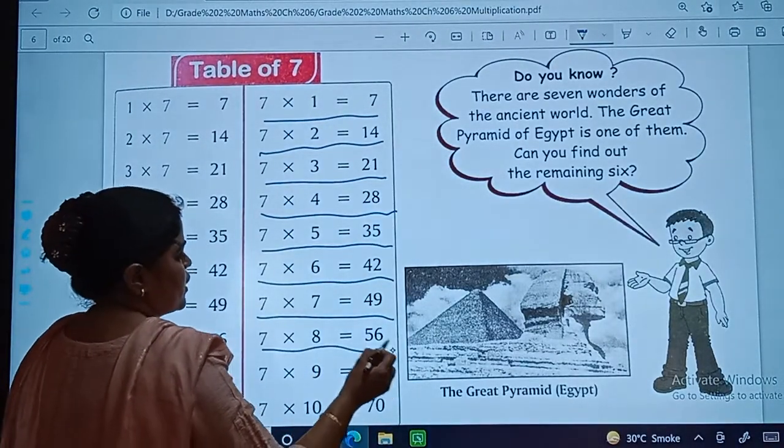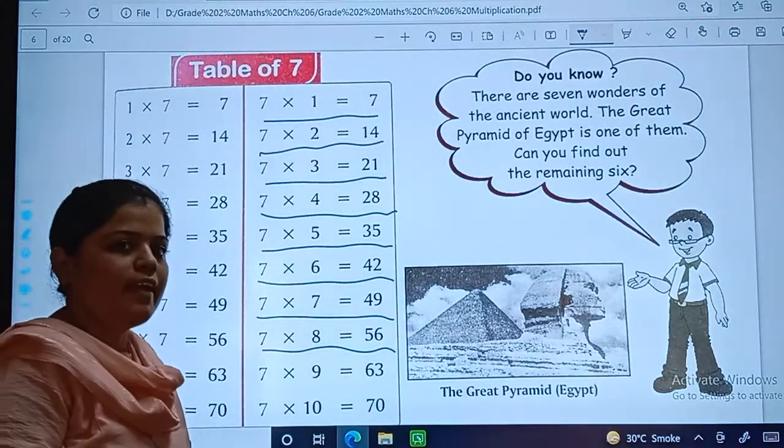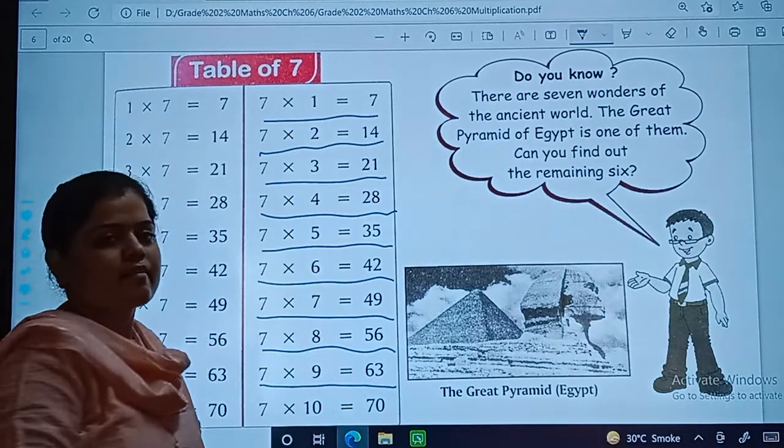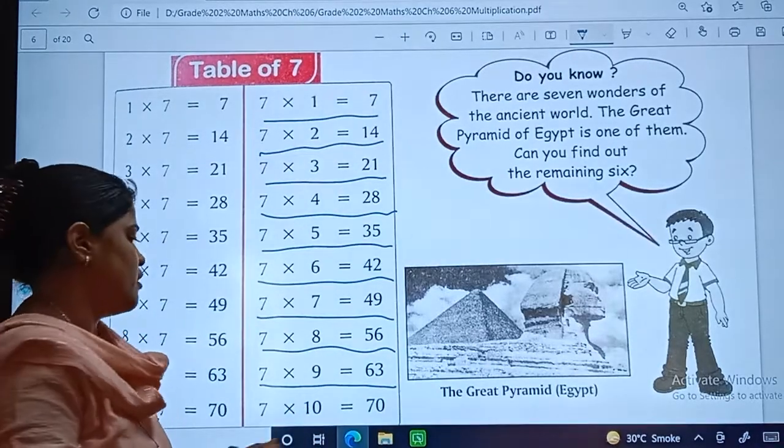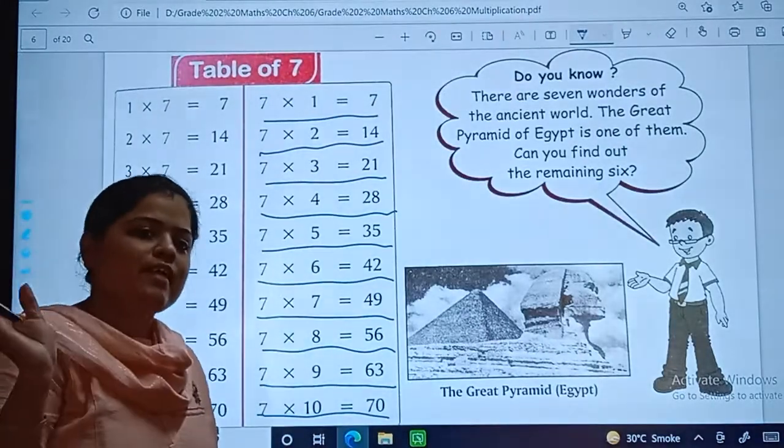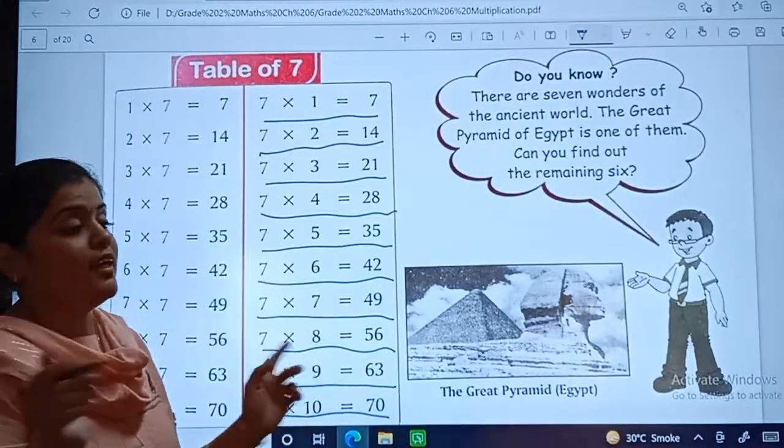7 eights are 56. 7 nines are 63. 7 tens are 70.